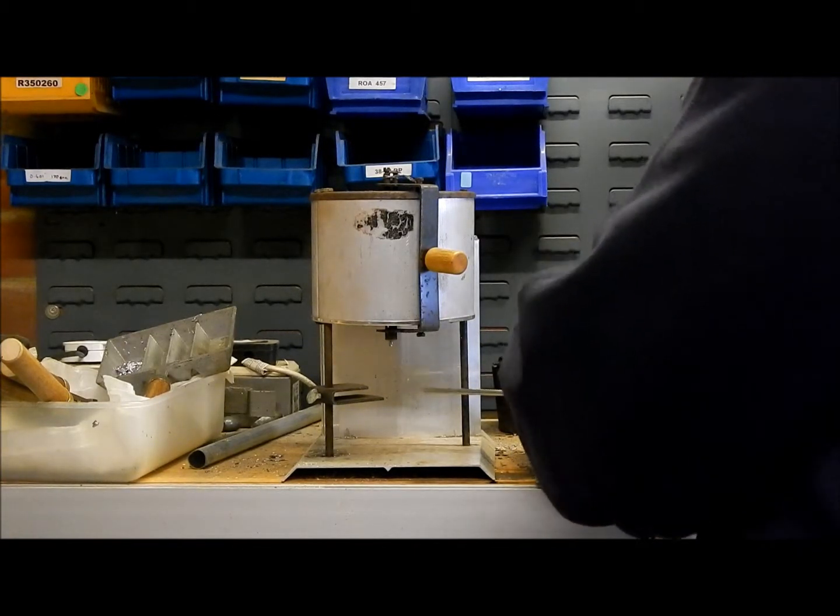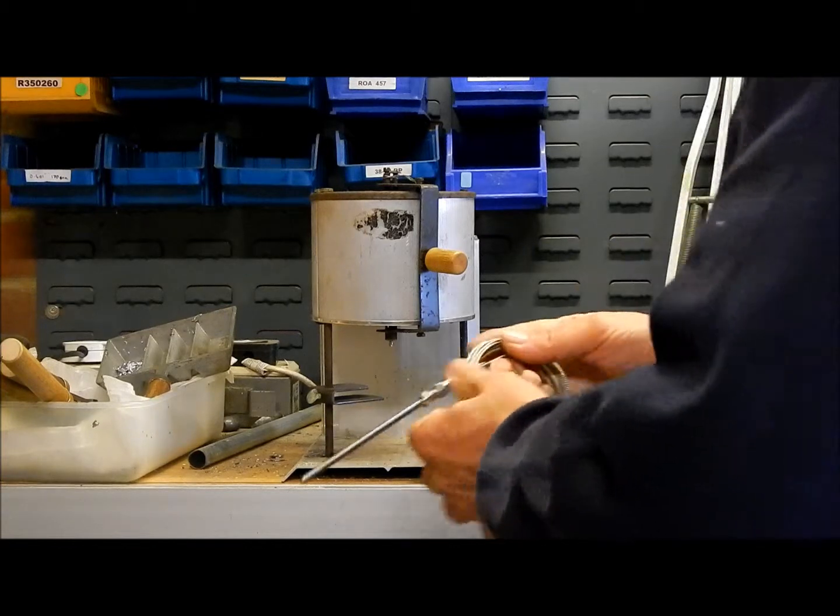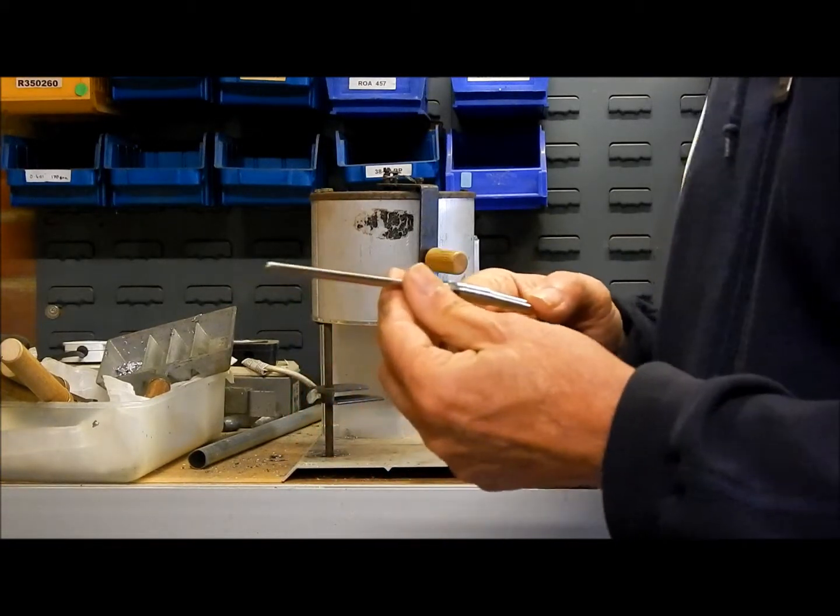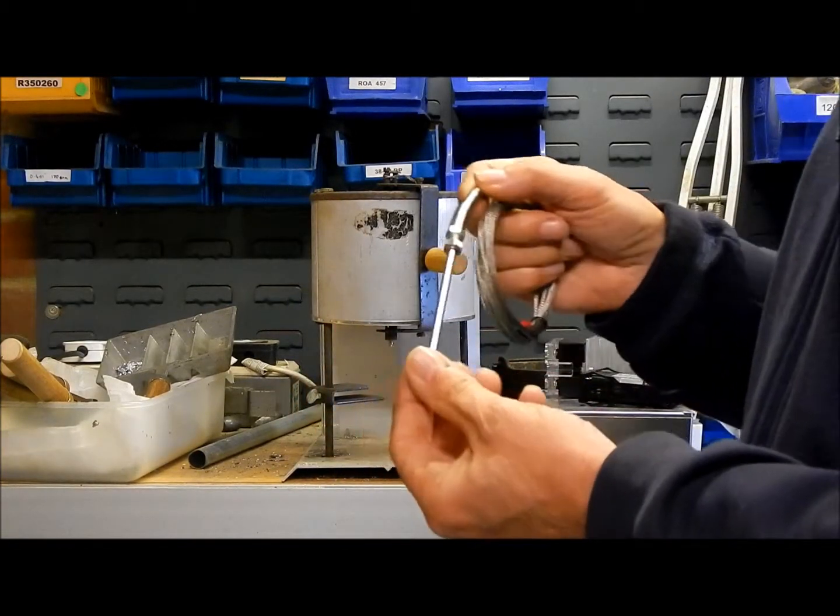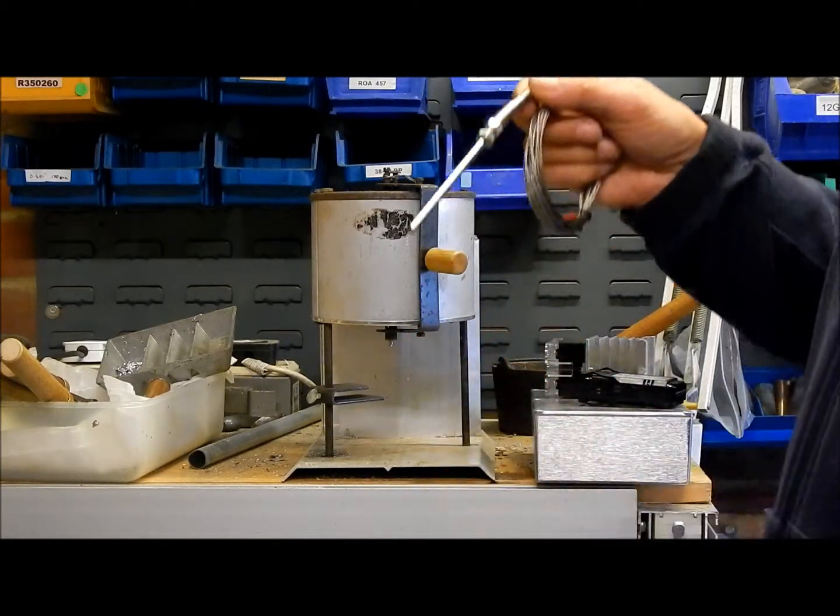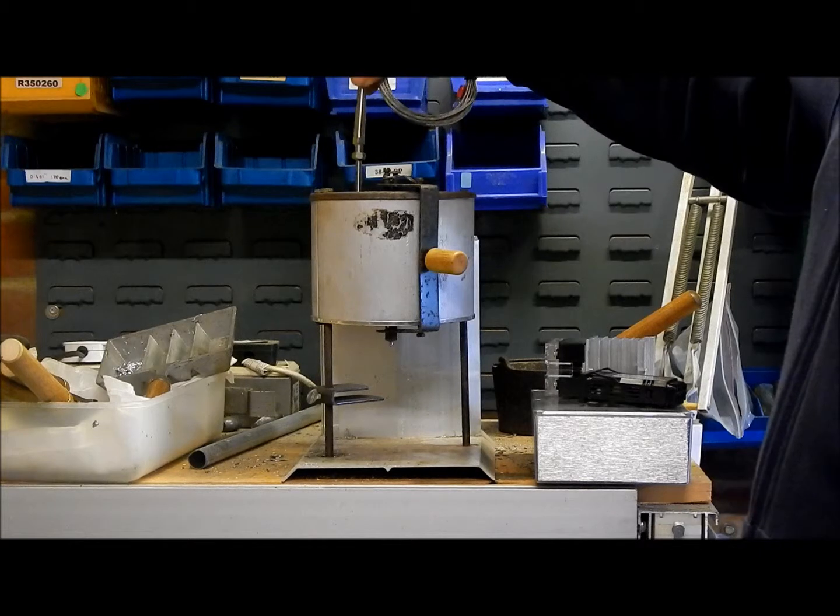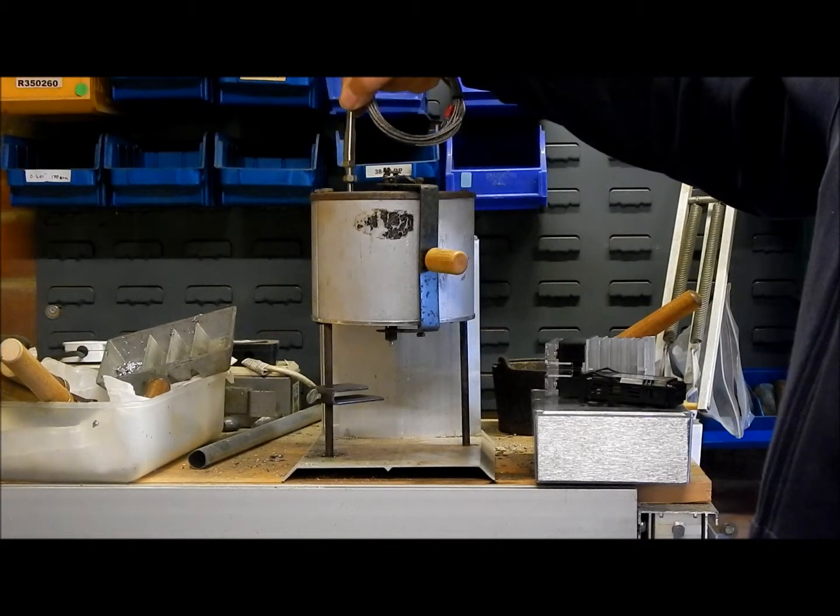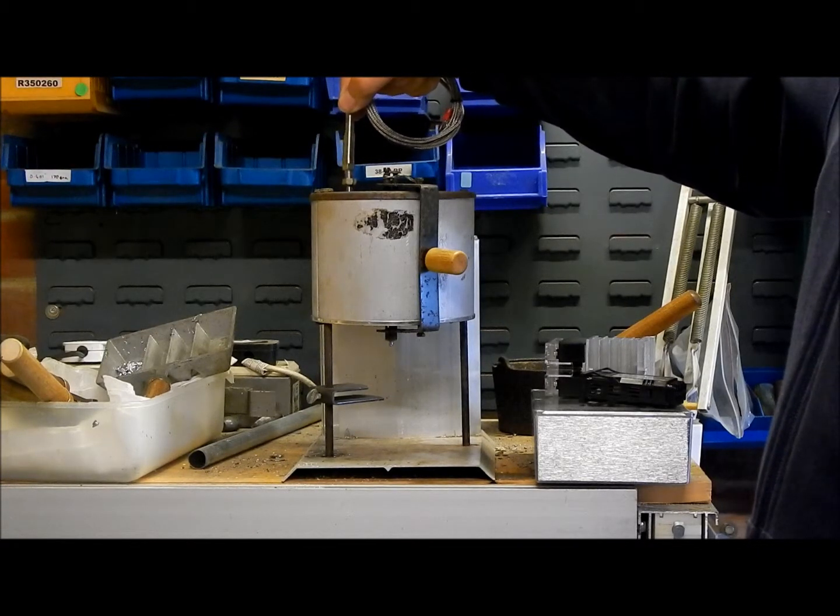So the first thing we need is something to sense the temperature of the molten lead. This is called a K-type thermocouple. It's enclosed in stainless steel housing and I'm going to mount that inside the lead pot so it's in direct contact with the molten lead.